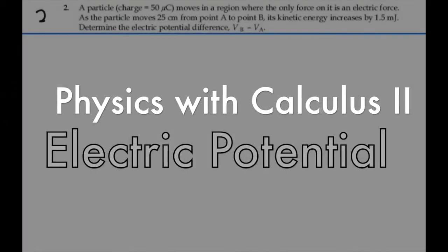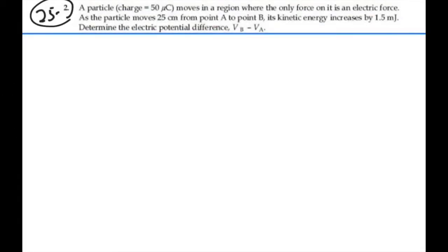Here's problem 25.2. A particle, charged 5 microcoulombs, moves in a region where the only force acting on it is an electric force. As the particle moves 25 centimeters from point A to point B, its kinetic energy increases by 1.5 millijoules. Determine the electric potential difference, VB minus VA.